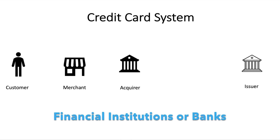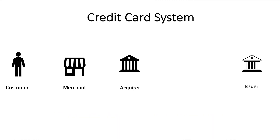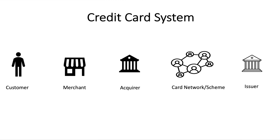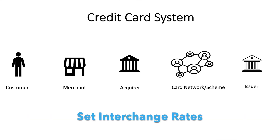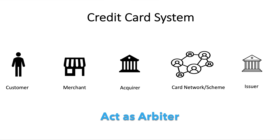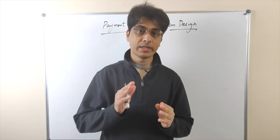An acquiring bank is a financial institution or bank that processes credit or debit card payments on behalf of a merchant. The acquirer allows merchants to accept credit card payments from card-issuing banks within an association. The acquiring bank is liable for charges made by the merchant if the merchant does not provide goods or services purchased. The final actor is the card network or association, also called a scheme — such as Visa, Mastercard, Discover, or American Express. Card associations set interchange rates and qualification guidelines and act as arbiter between issuing banks and acquiring banks.